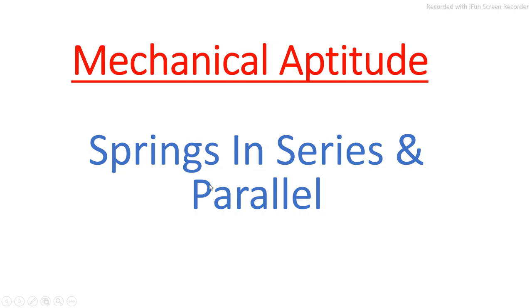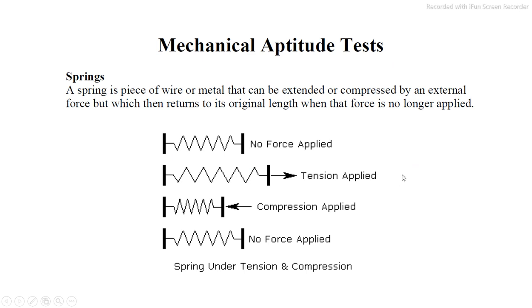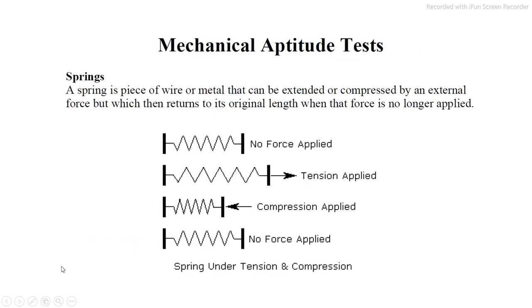In springs we have two conditions: either springs are connected in series or they are connected in parallel. Here you can see an example with a pictorial representation. There is a spring with no force applied. When a tension is applied, the spring will move in the direction of force. If a compression force is applied, the spring will get compressed and then return to its normal state.